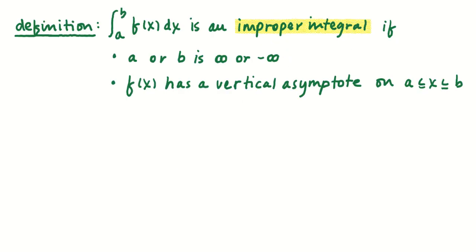Before I go back and investigate that integral, I need to define an improper integral. An integral is going to be improper if either of the bounds, or both of them, are infinite, or if there's a vertical asymptote either at the boundary of the region of integration or in the interior. Anywhere there's a vertical asymptote that we're integrating over will cause the integral to be improper.